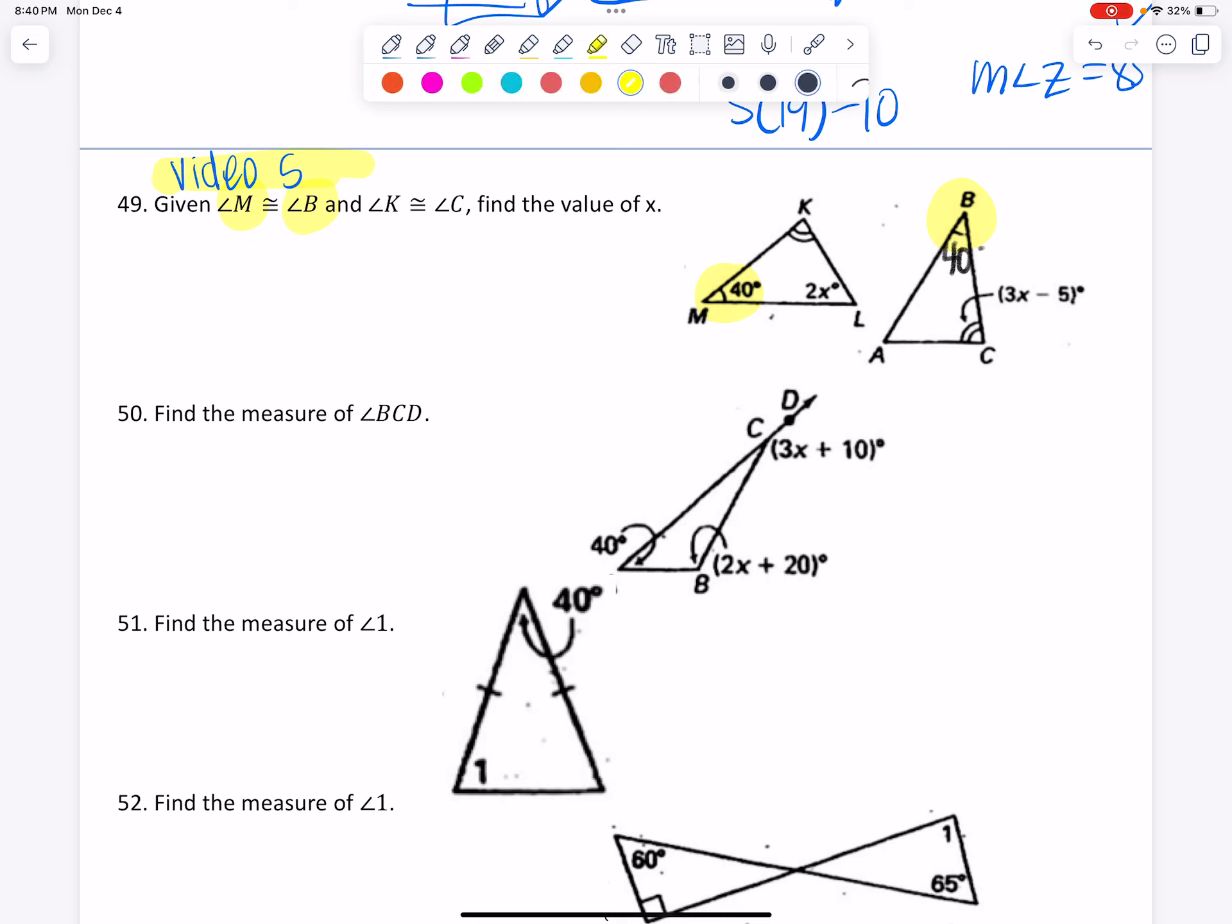Then it says K is congruent to C. And then find the value of x, meaning that these last two must be congruent. So I could write a 2X in both of those. 2X there as well. K is 3X minus 5, so this is also going to be 3X minus 5.